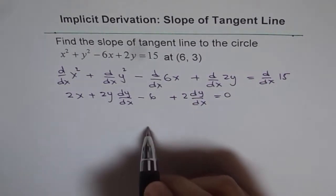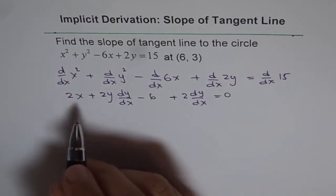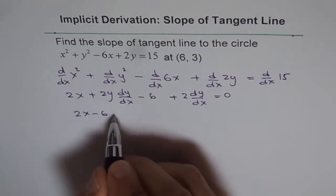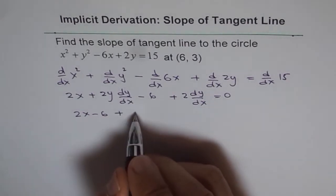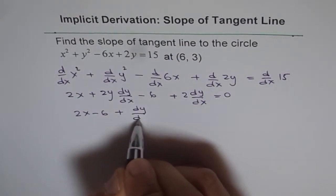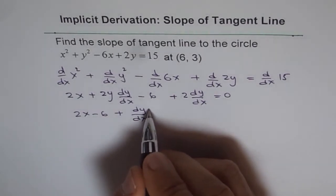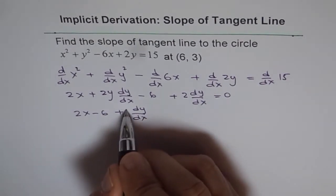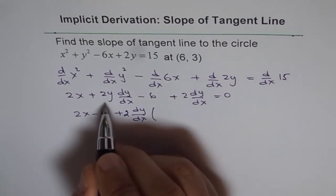Now we can combine dy dx like terms. We get 2x minus 6 plus dy dx, and in the brackets we can write 2 times, we can take 2 common.